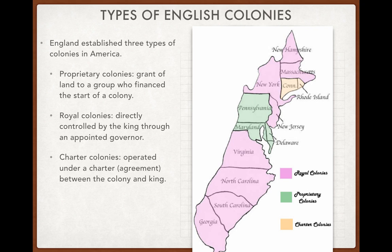Just a brief look at the 13 original colonies: they weren't all created at the same time, and it wasn't some master plan by England. There were actually three separate types of colonies. First, proprietary colonies — grants of land given to either an individual or a group of people. The purpose of those colonies was to make money, basically like a new company starting up, going to America to take land and make money.